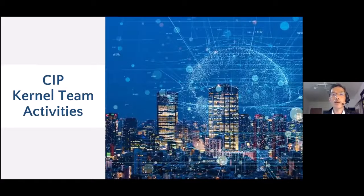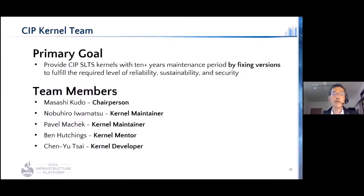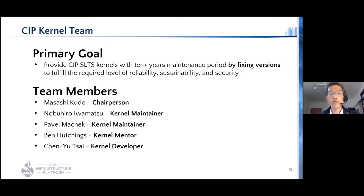Let's move on to the CIP kernel team activities. The primary goal is to provide CIP SLTS kernels for 10 plus years by fixing versions to fulfill the required level of reliability, sustainability, and security. There are two kernel maintainers, one kernel mentor, and one kernel developer in the team. While highly motivated, the team cannot achieve the goal alone and definitely relies on upstream project activities. The question is how to use upstream outputs and how to work with upstream projects.